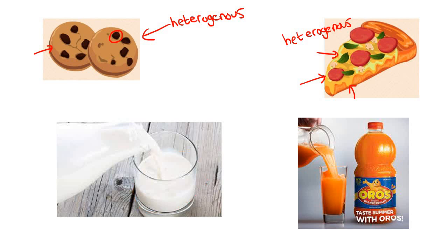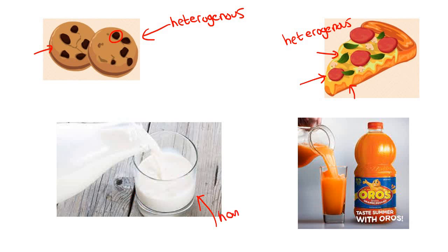Let's look at milk. If you look at milk, it just looks like it's one thing. But did you know that milk has water in it, it's got cream, it's got all sorts of different things? But it looks like it's only one thing, so that would be homogeneous. And then let's look at OROS. Of course there are different things in here — there's water, there's OROS — but if you look at it, it just looks like it's one type of thing. You can't see the different parts, and so that would also be homogeneous.